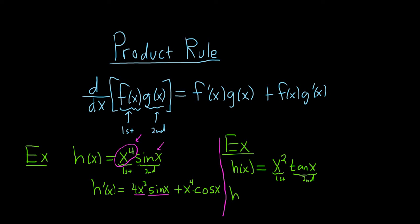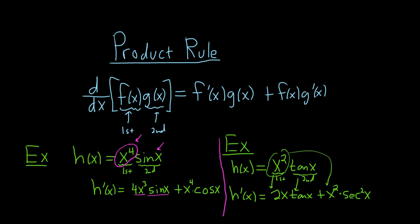Taking the derivative, h′(x) is the derivative of the first, which is 2x, times the second, tangent x, plus the first, x squared, times the derivative of tangent, which is secant squared. Remember, the derivative of the tangent function is secant squared. So it's 2x·tan(x) + x²·sec²(x). And that's it — that's the Product Rule. I hope this video has been helpful.